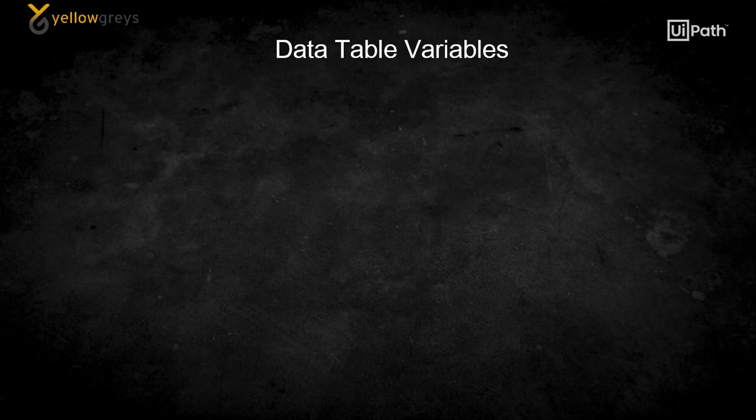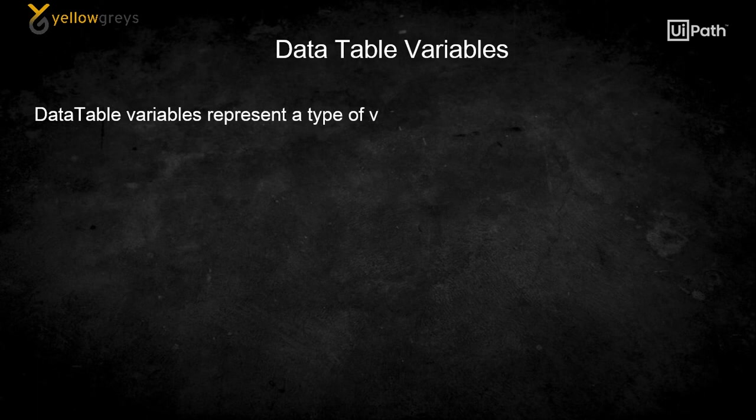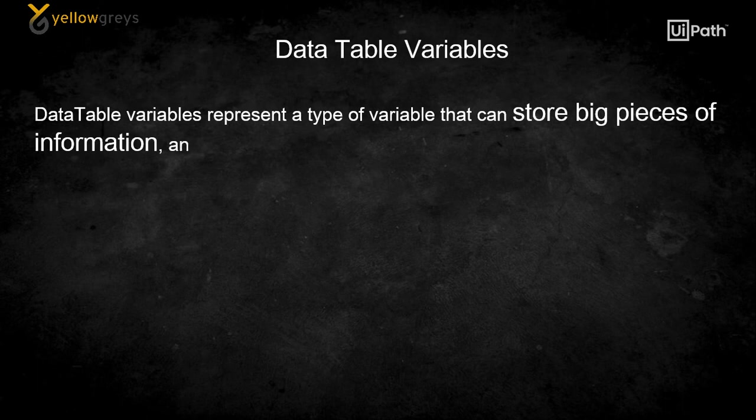What do you think of when you hear the word table? Yeah, it's a combination of rows and columns, right? Yes. Data table variable represents a type of variable that can store big pieces of information and acts as a database or a simple spreadsheet with rows and columns.